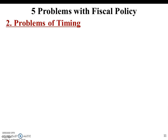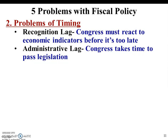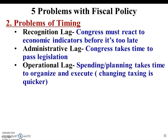Number two: problems of timing. Recognition lag — Congress must react to economic indicators before it's too late. Sometimes they have to be proactive. If you're too late introducing a spending or taxation bill, the damage can already be done, and you could end up in a prolonged recession or even a depression. Administrative lag — Congress takes time to pass legislation. And operational lag — the spending and planning takes time in organizing and execution. Just because you pass the bill and put the money out there doesn't mean it's going to get to the right places quickly.